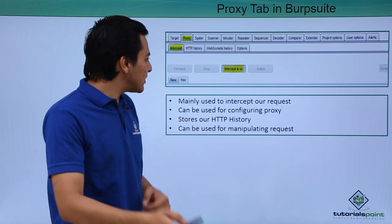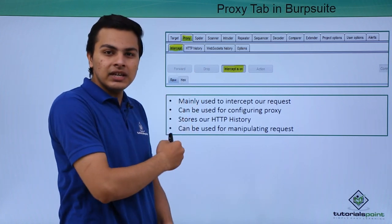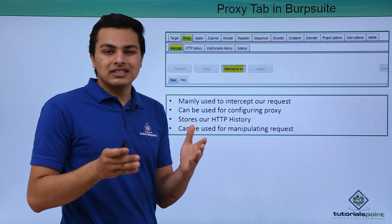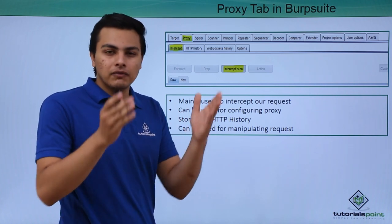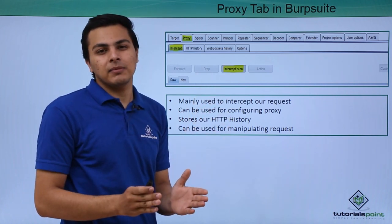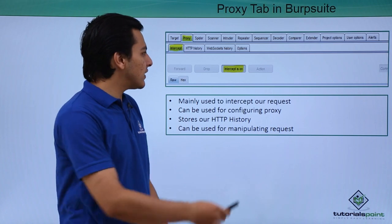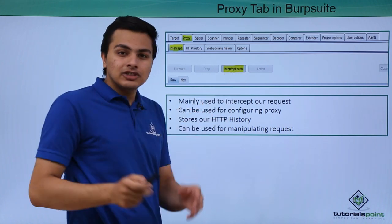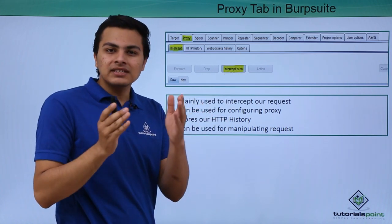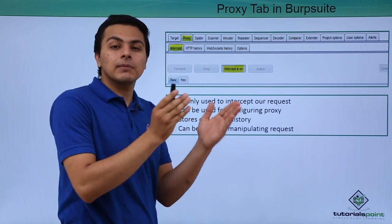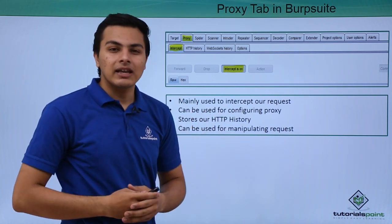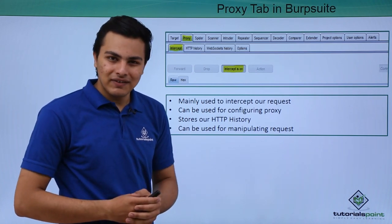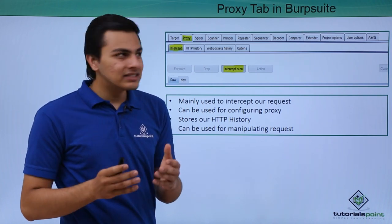The HTTP History tab keeps a record of all the requests which have been intercepted by BurpSuite. There is also a WebSocket History tab. In the Options tab we can configure BurpSuite — on which particular IP address and on which port BurpSuite will listen for all the requests.